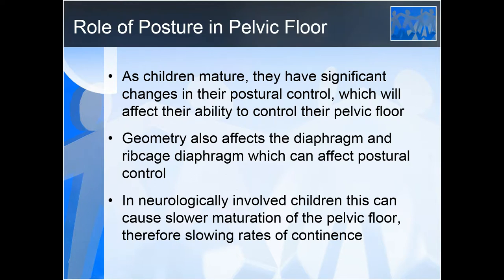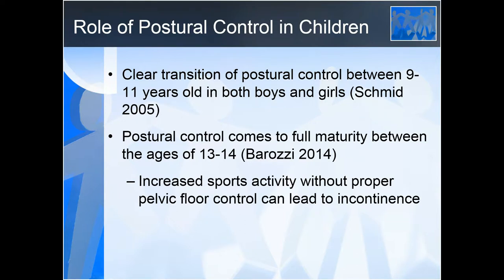Children with neurologic deficits often toilet train much later, even if they have intact neural control to the bladder. In typically developing children, there is a clear transition of postural control between the ages of 9 and 11, and postural control comes to full maturity between 13 and 14. In both of these age ranges we often see increased rates of urinary incontinence. Children between 9 and 11 losing postural control may lose the ability to contract and relax pelvic floor muscles, leading to weakness.